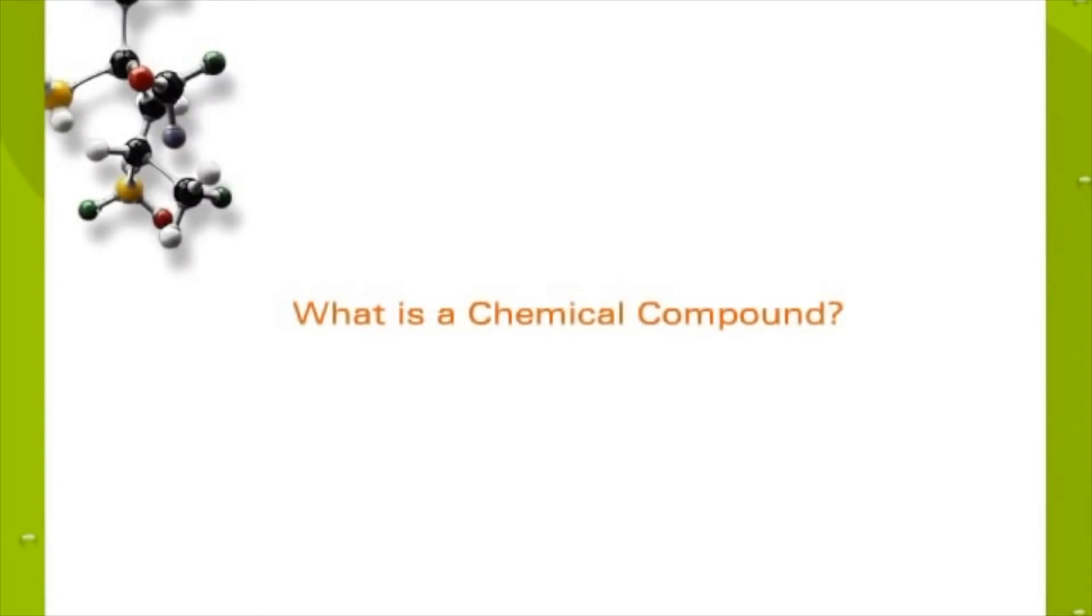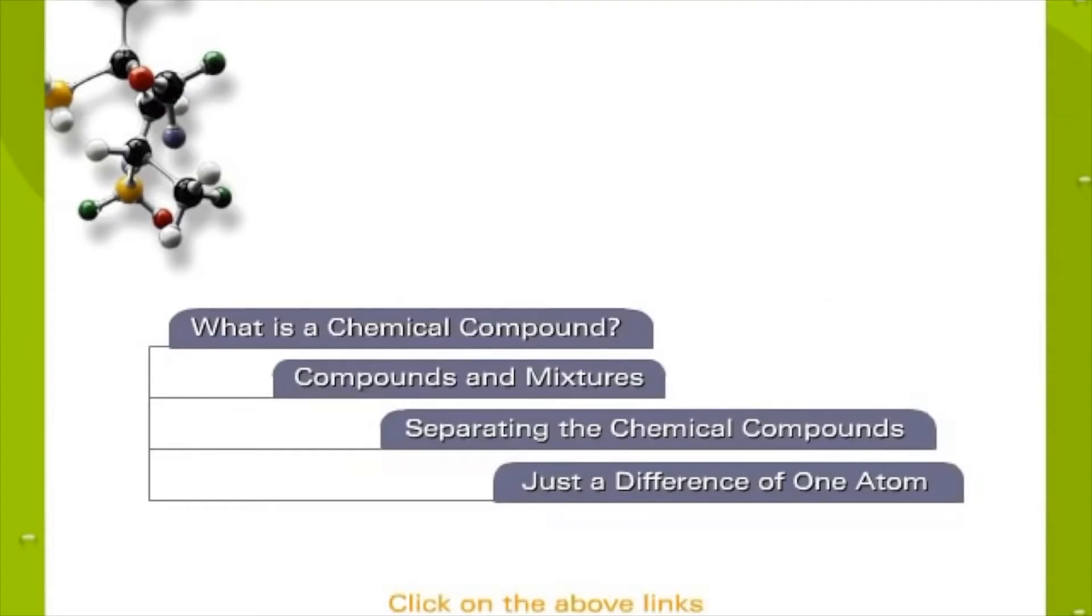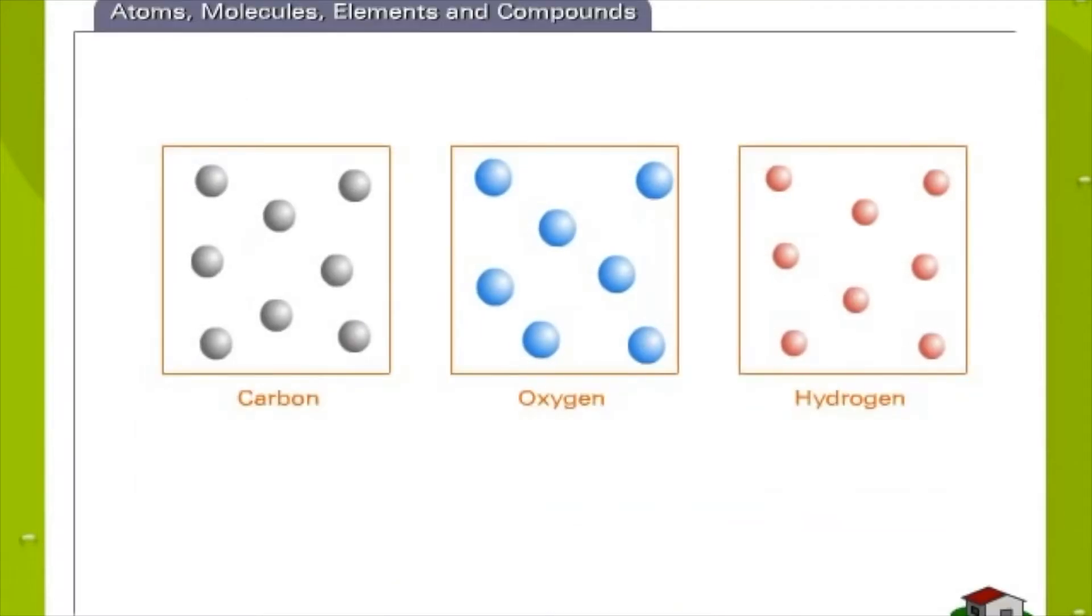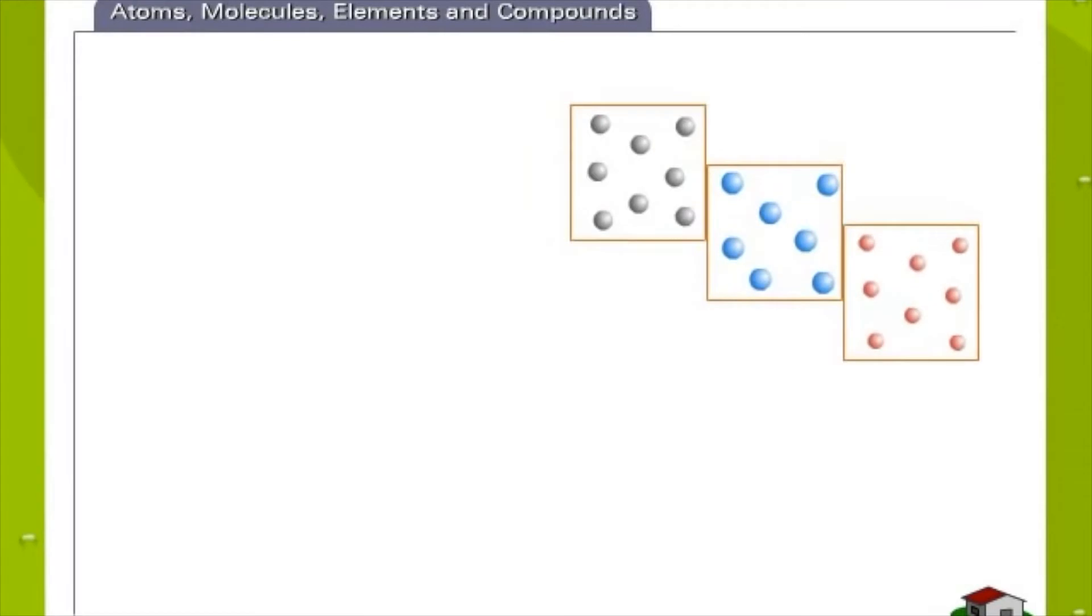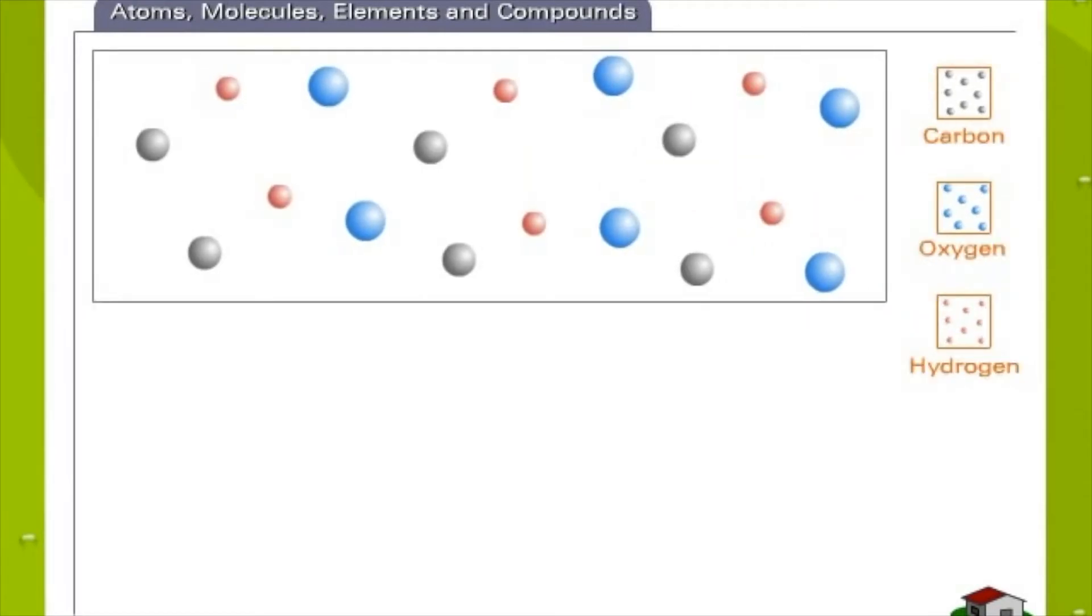What is a chemical compound? Let us learn what a chemical compound really is. Click on the titles listed here. Atoms, molecules, elements and compounds. When two or more elements bond together chemically, they form a new substance with its own properties. This combination of elements is called a compound.